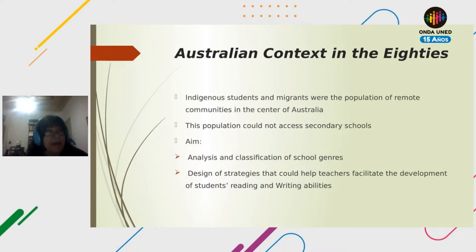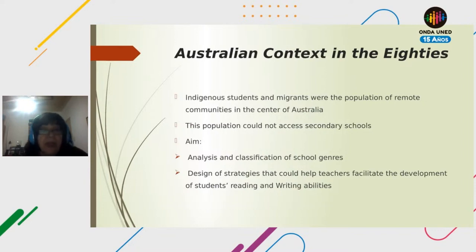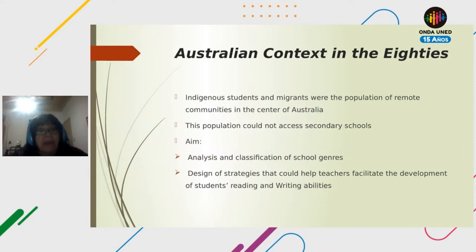Australia received many migrants and had large indigenous populations concentrated in the center of the country. In primary schools, children had great difficulties acquiring English, the national language. The first thing these researchers did was to analyze and classify the school genres the children were asked to produce, and also to design strategies that could help them.